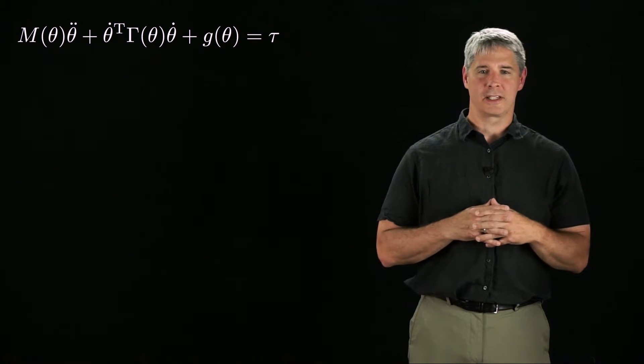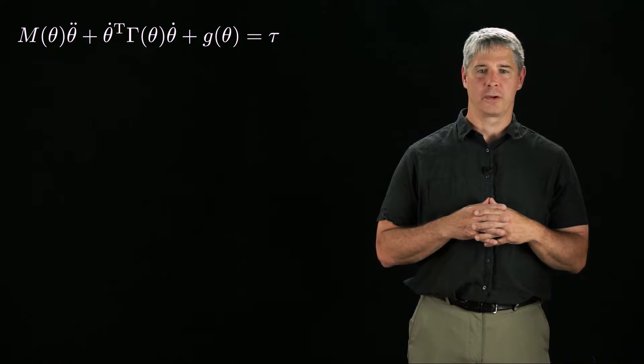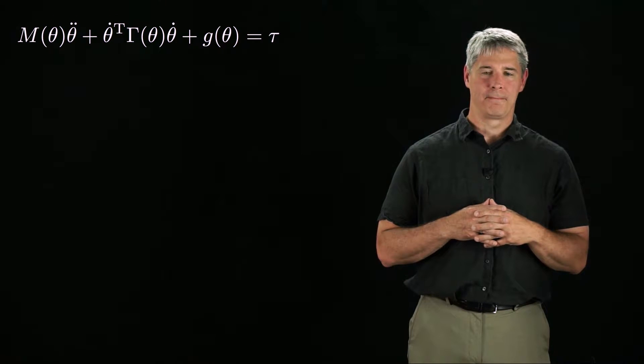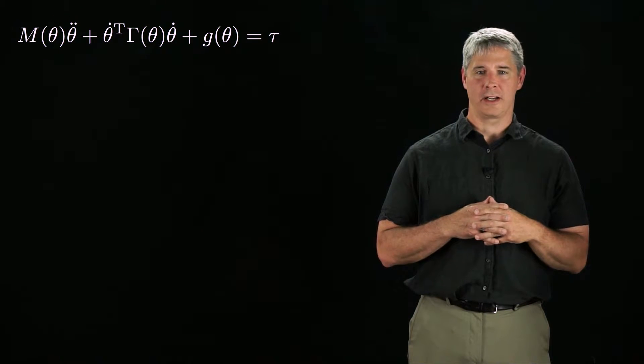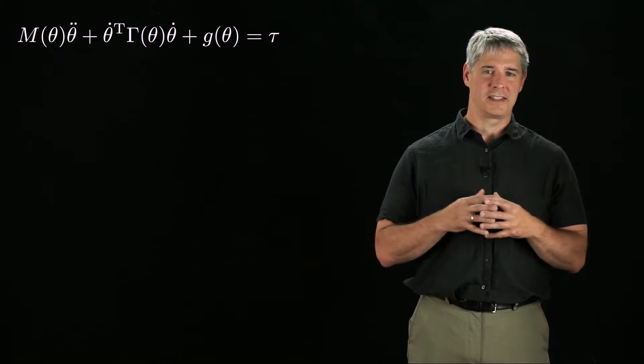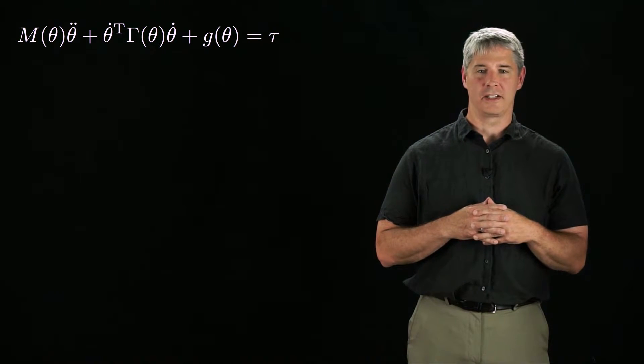Recall that the dynamics of a robot can be written as M times theta double dot plus a velocity product term plus a gravity term equals the joint force and torque vector tau. Here I've written the velocity product term using the Christoffel symbol matrix gamma to emphasize that it is quadratic in the joint velocity vector.